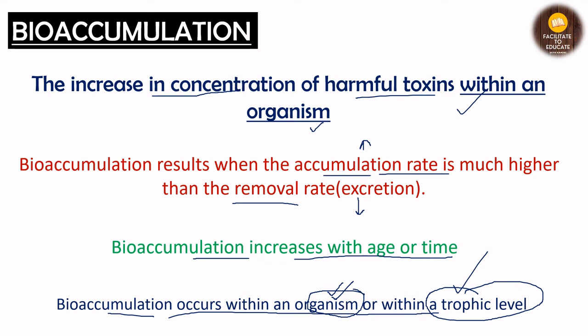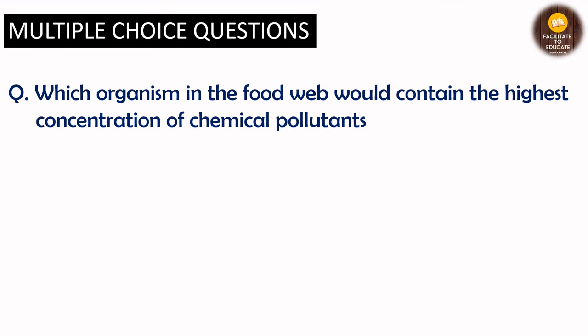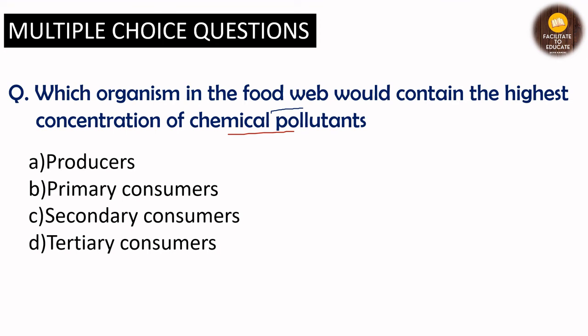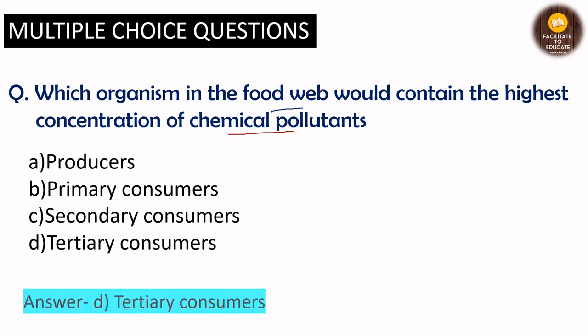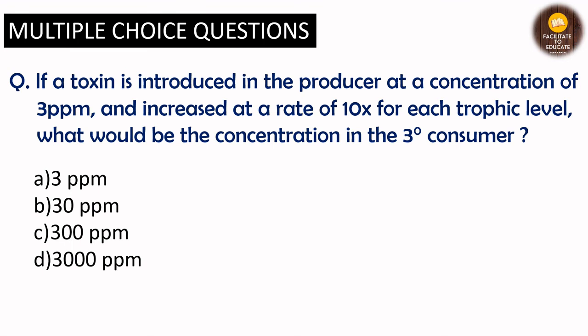Let's move on to the MCQs. First MCQ: which organism in the food web would contain the highest concentration of chemical pollutants? Options are: producers, primary consumers, secondary consumers, and tertiary consumers. Since biomagnification tells us that concentration increases with each trophic level, the maximum concentration will be in the last trophic level. Here, the answer is option D — the tertiary consumer.